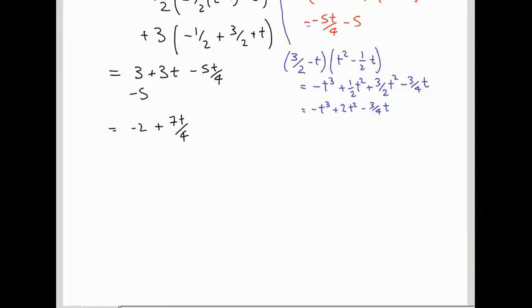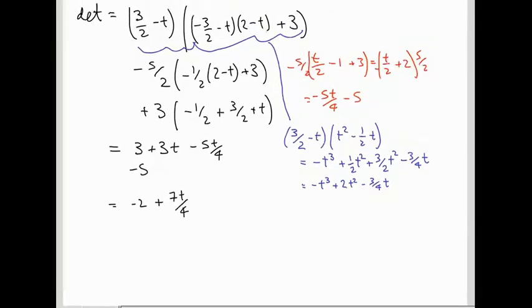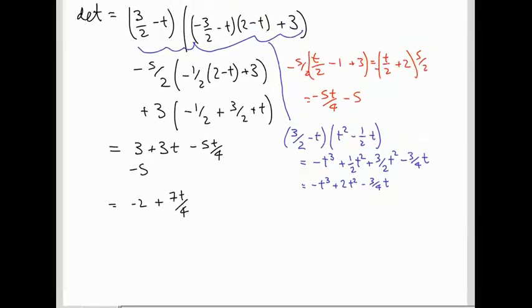So, I claim when you multiply this whole mess out, it becomes minus t cubed plus 2t squared minus 3 quarters t. So, if we add that on to this, what we've already got, we're going to get minus t cubed plus 2t squared. The minus 3 quarters t is going to interact with this 7 quarters t and just give us 4 quarters t, otherwise known as t. So, the polynomial in the end doesn't look too bad. We end up with minus t cubed plus 2t squared plus t minus 2.